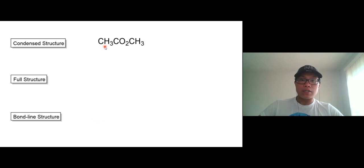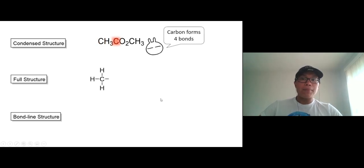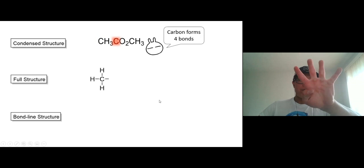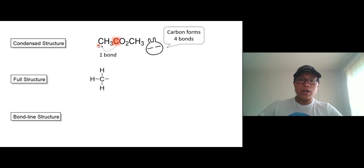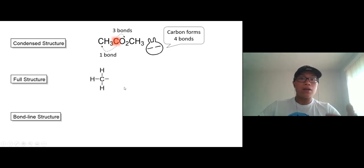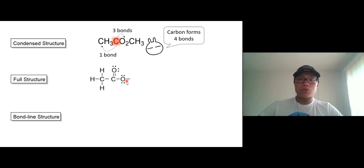Let's start with the full structure. Start with this carbon right here — this is CH3. Next carbon right here: remember carbon has four bonds. So one bond goes to this carbon on the left, and the other three bonds are going to be bonded with oxygen — we're going to go double bond O and O.